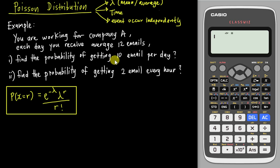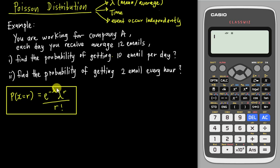In this video I want to use one example to help you understand how to solve this kind of question and how to use the calculator. First, let me show you the formula for Poisson distribution. The formula is: probability of X equals r is e to the power of negative lambda, multiplied by lambda to the power of r, divided by r factorial.